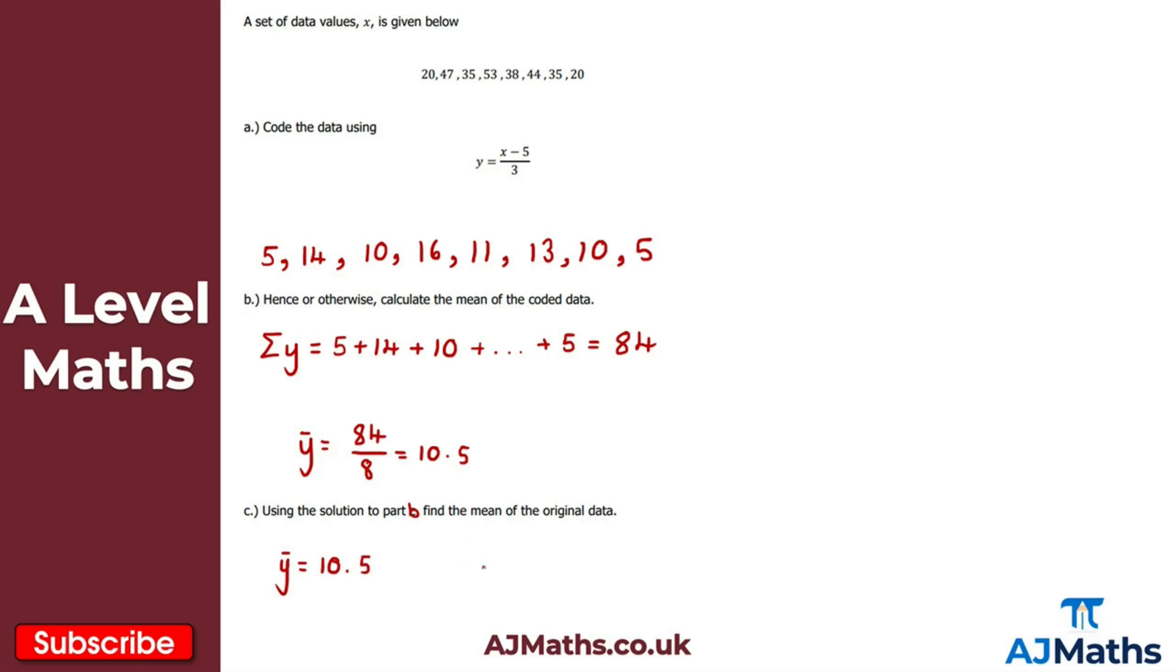But we also know that we can express the mean of the coded data set y bar as x bar minus a, all over b. We know that a here is 5, b is 3, and we know that y bar is 10.5. So what we're doing is just reversing this process.